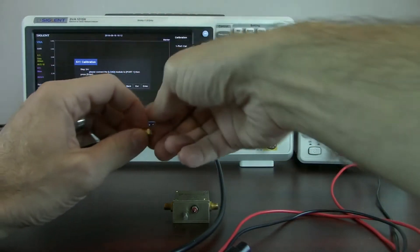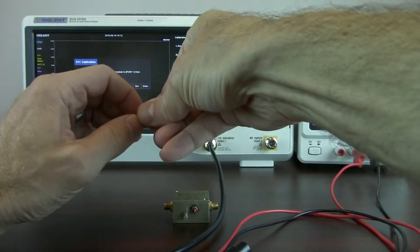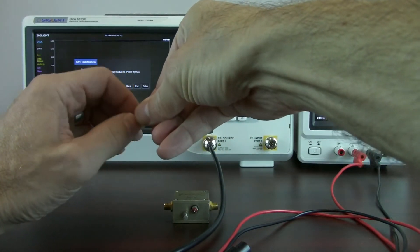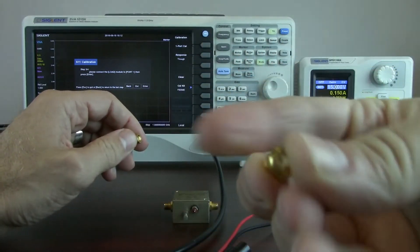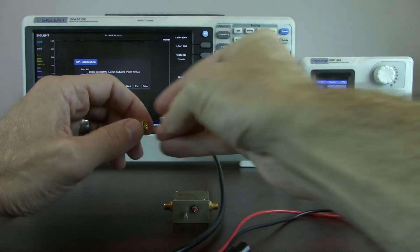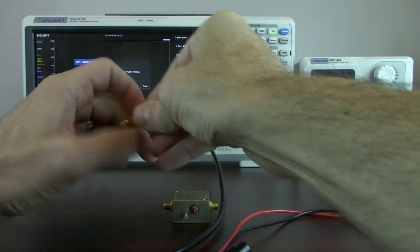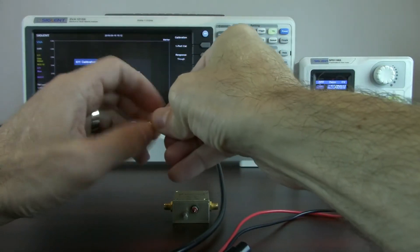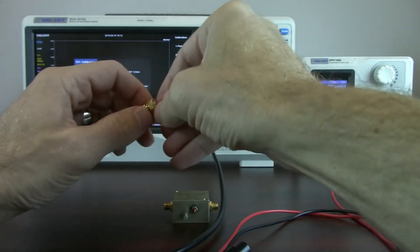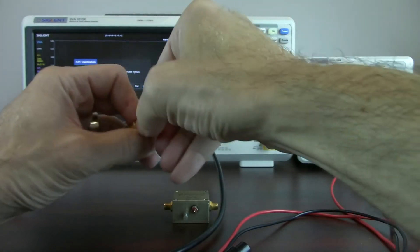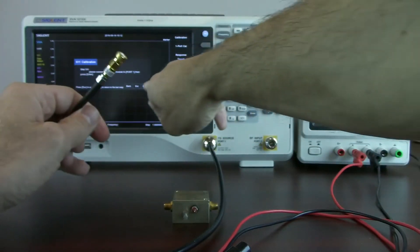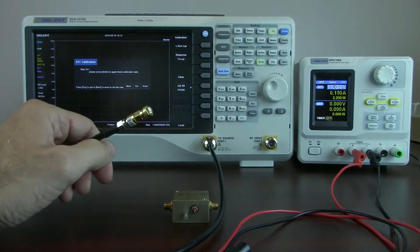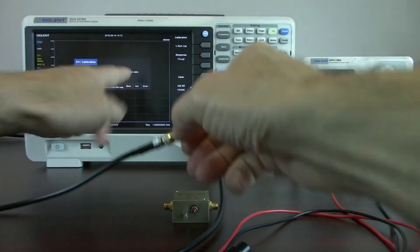And now we want to connect the load module. So we're going to disconnect that short. And now we've got a load, this is a 50 ohm load, and we're going to connect it and hit enter. Now we're calibrated. So now we've applied that calibration.